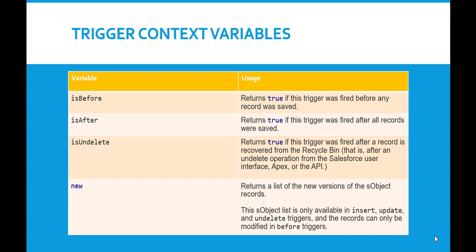isUndelete returns true if the trigger was fired after a record is recovered from the recycle bin. Basically, it applies when you do an undelete operation — recovering a record from the recycle bin — whether through the Salesforce user interface, Apex code, or the API.